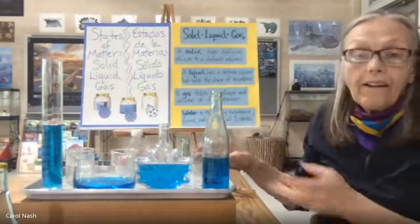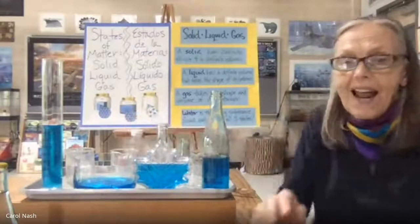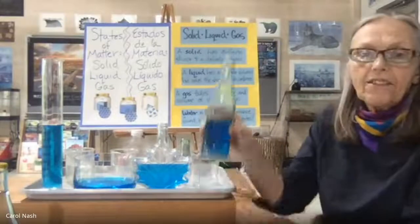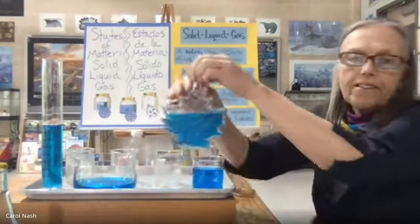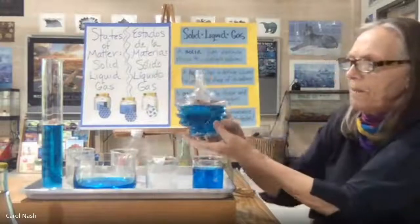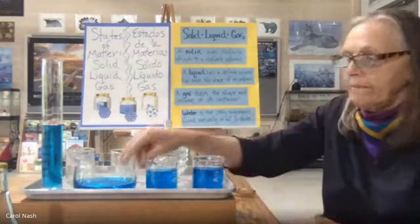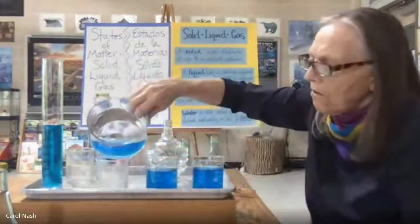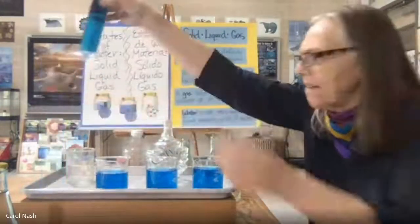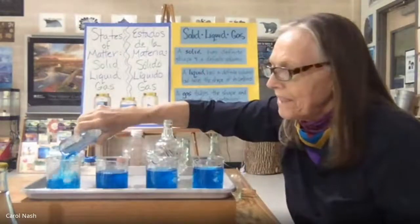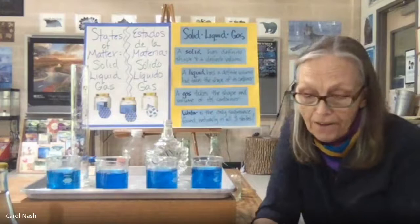I've got a demonstration for liquid taking the shape of a container. I've got three containers of different shapes, all filled with liquid. My water bottle shows 200 milliliters. This cool bottle with maple syrup — 200 again. A big flat bowl — it looks like more, but it's 200 again. And this big tall one — 200 again. So all those different shapes actually had the same amount, the same volume of water.